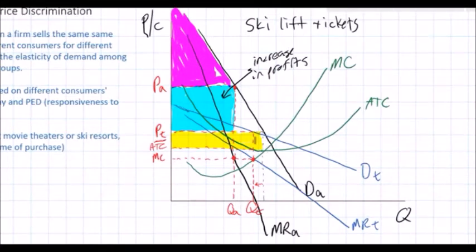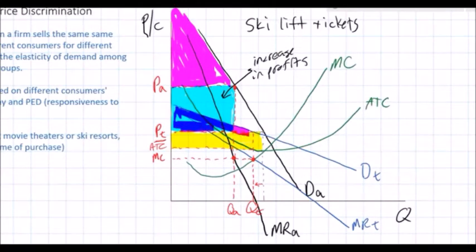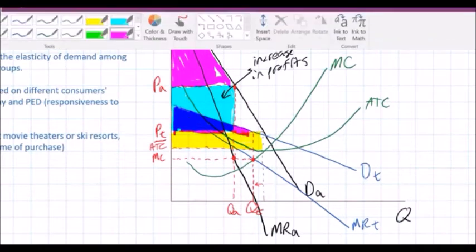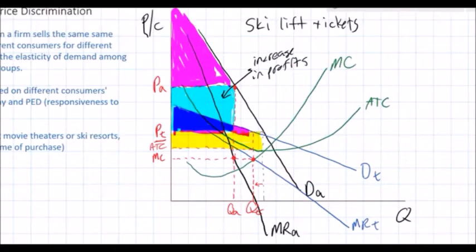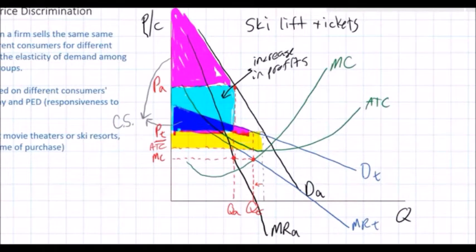Our total consumer surplus is now made up of two parts: the consumer surplus of adults — below the adults' demand curve and above the adult price PA — plus the consumer surplus of teenagers, which is the area below the teenagers' demand curve and above the price PT. Since we have two different demand curves and two different prices, we have two different areas of consumer surplus. The increase in consumer surplus is the lower of these two triangles, as more teenagers can now afford to ski.